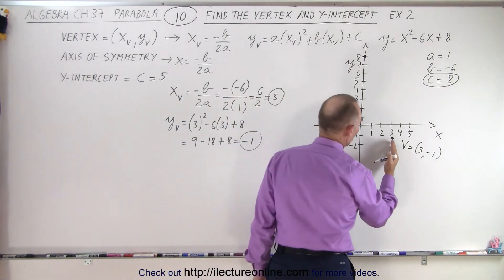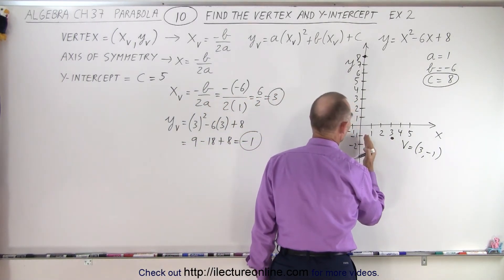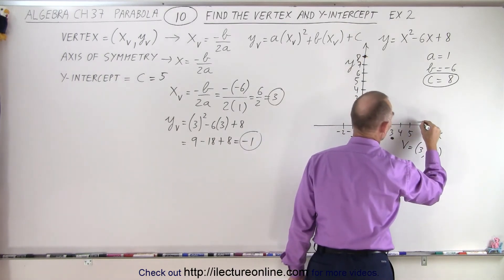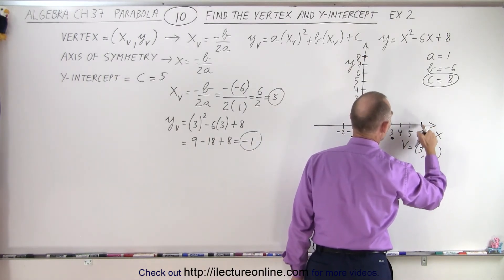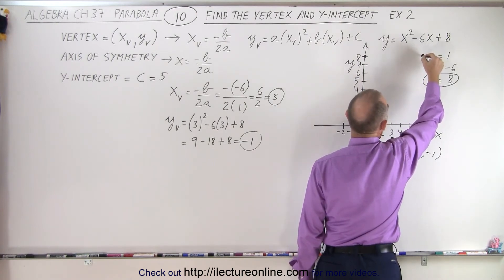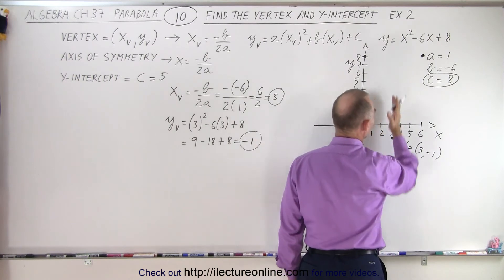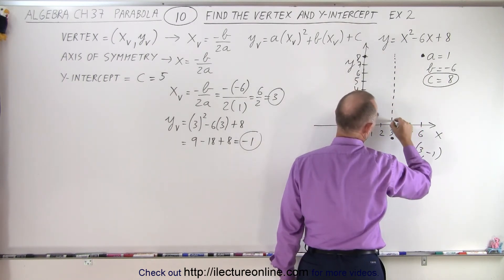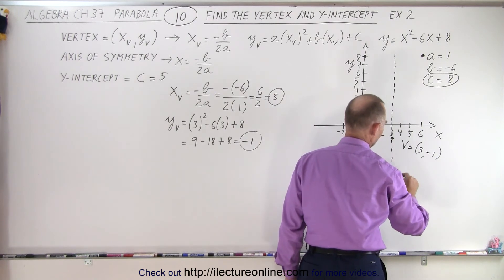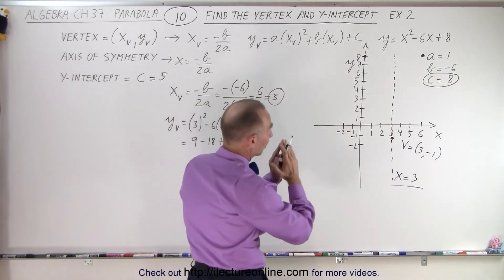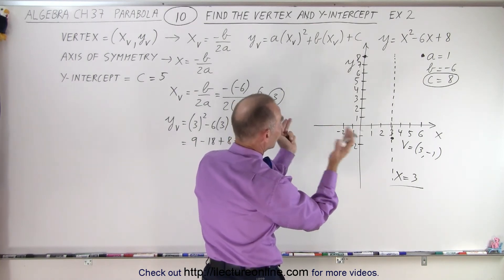So notice that if I go 3 units to the left, my y value is equal to 8, which means if I go 3 units to the right, 1, 2, 3, my value will be 8 again, because we should have perfect symmetry along the line, not y, but x equals 3. So my axis of symmetry is right here. x equals 3 is the axis of symmetry. The parabola will then be an exact mirror image about that axis.